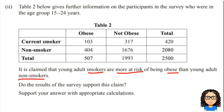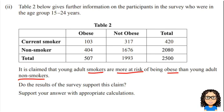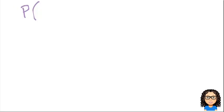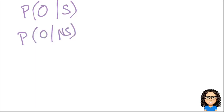It doesn't talk about how many times more likely they are, so in this case I'm going to go with finding an absolute risk. What I want is to find the probability — it talks about smokers being more at risk of being obese — so I want to find what's the chance of being obese if you're a smoker and compare that to the chance of being obese if you're a non-smoker. So I want the chance of being obese given that you are a smoker, and the chance of being obese given that you are a non-smoker. Those are the two probabilities I want to find.